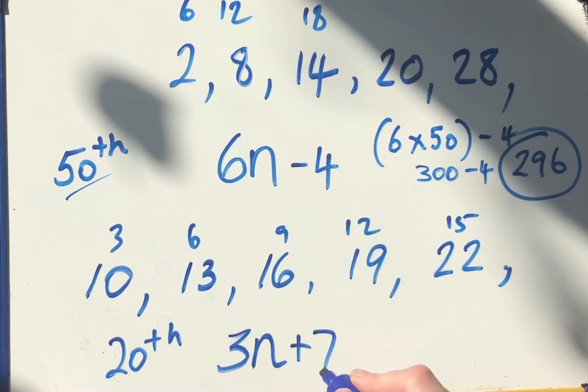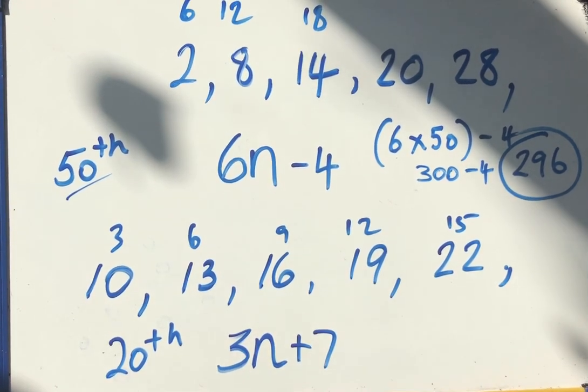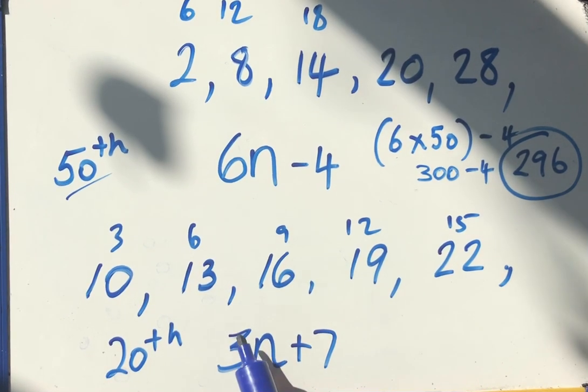So I'm adding seven each time because three plus seven gives me 10, six plus seven gives me 13, etc. So for the 20th I want to do 3 times 20 and then add 7. So 3 times 20 is 60, plus 7 is 67.